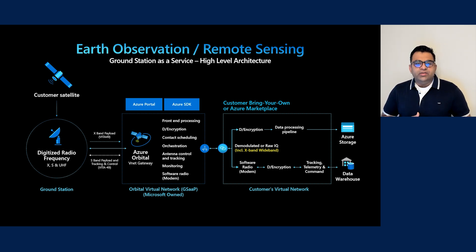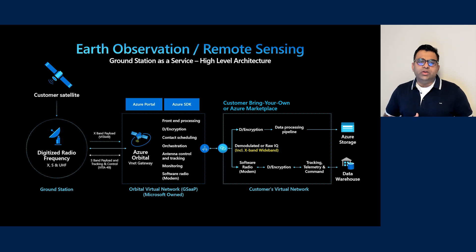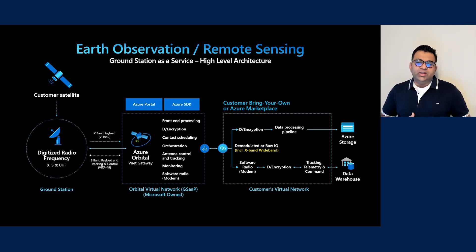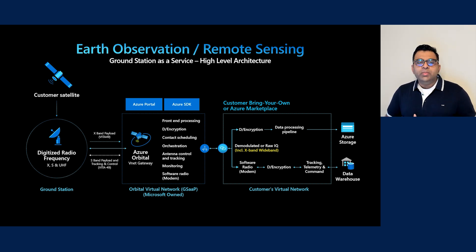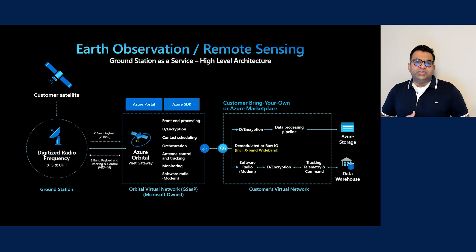The processed data is then delivered to the customer's virtual network where it can be further processed and enriched using multiple other Azure services including compute, storage, AI, machine learning, and cognitive services at enormous scale. Orbital can also provide fully digitized wideband raw signal — that is raw IQ — to customers for processing for unique scenarios.